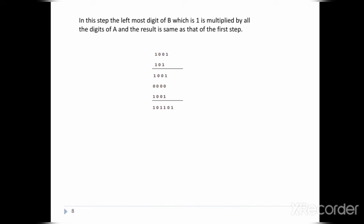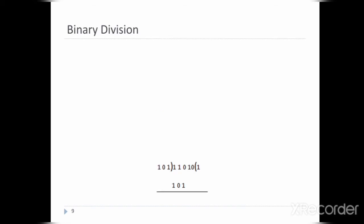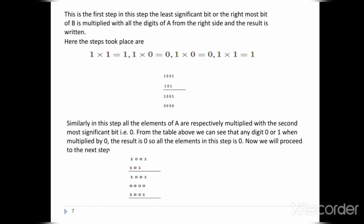In the third step, the leftmost digit of B which is 1 is multiplied by all the digits of A, and the result is the same as the first step, which is 1001. So we have: 1001, plus 0000 shifted, plus 1001 shifted.